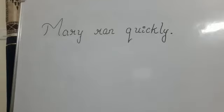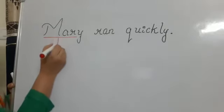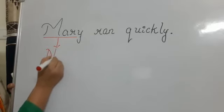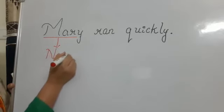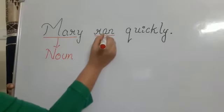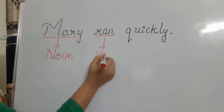Yes, it is very easy to identify because Mary itself is showing the name of a person, that means it is denoting a noun. And ran, of course, is showing as a verb because it is showing an action being done.